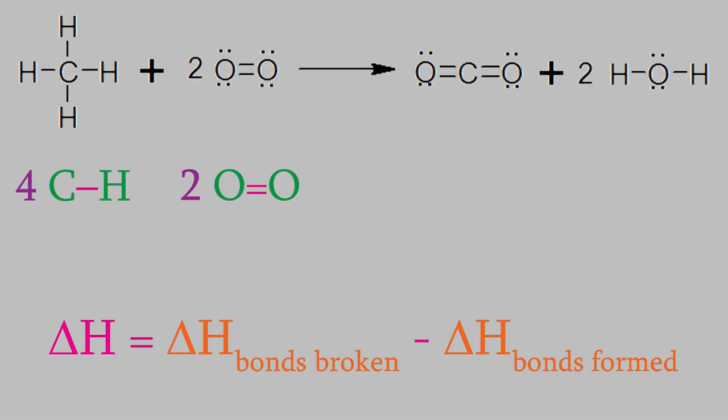Meanwhile, on the product side, the carbon dioxide molecule has two carbon-oxygen double bonds, and the water has two oxygen-hydrogen single bonds. There are two water molecules, so all together we're forming two CO double bonds and four OH single bonds.